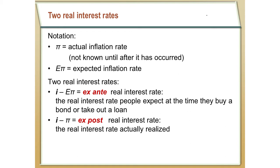The first thing to notice is that there are actually two different real interest rates: the ex-ante real interest rate and the ex-post real interest rate. To understand these two terms, we have to know the difference between actual inflation and expected inflation. Actual inflation is what actually happens with the price level — we don't know what happens until it happens, so this is something that's backwards looking. After the fact, we can go back and look at the data and see how much prices actually rose.